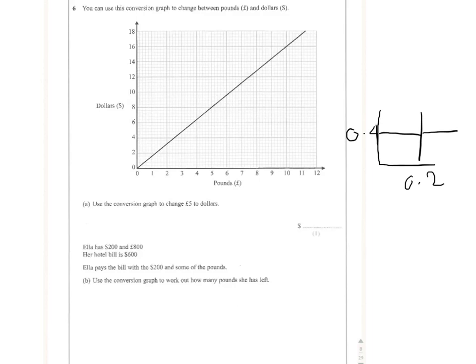Use the conversion graph to change five pounds to dollars. This is a nice easy one that doesn't actually require the information I've just given you because five lines up exactly with eight. So the answer to the first question is five pounds is worth eight dollars.